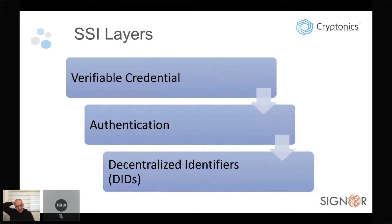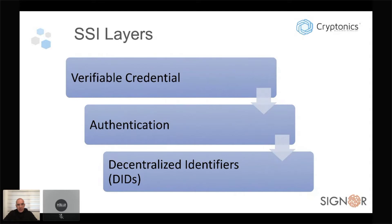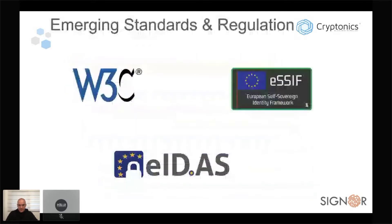Translating this into layers: at the bottom we have decentralized identifiers — just numbers and public keys that live on the blockchain. On top of this there's an authentication layer where you prove you are or control a certain identity. And on top of that, we have credentials — verifiable claims by credential issuers that the credential verifier can use. This only makes sense if everyone uses a compatible system — otherwise it's similar to the federated or centralized identity solution with data fragmentation and a fragmented ecosystem. So it's important to look at standards.